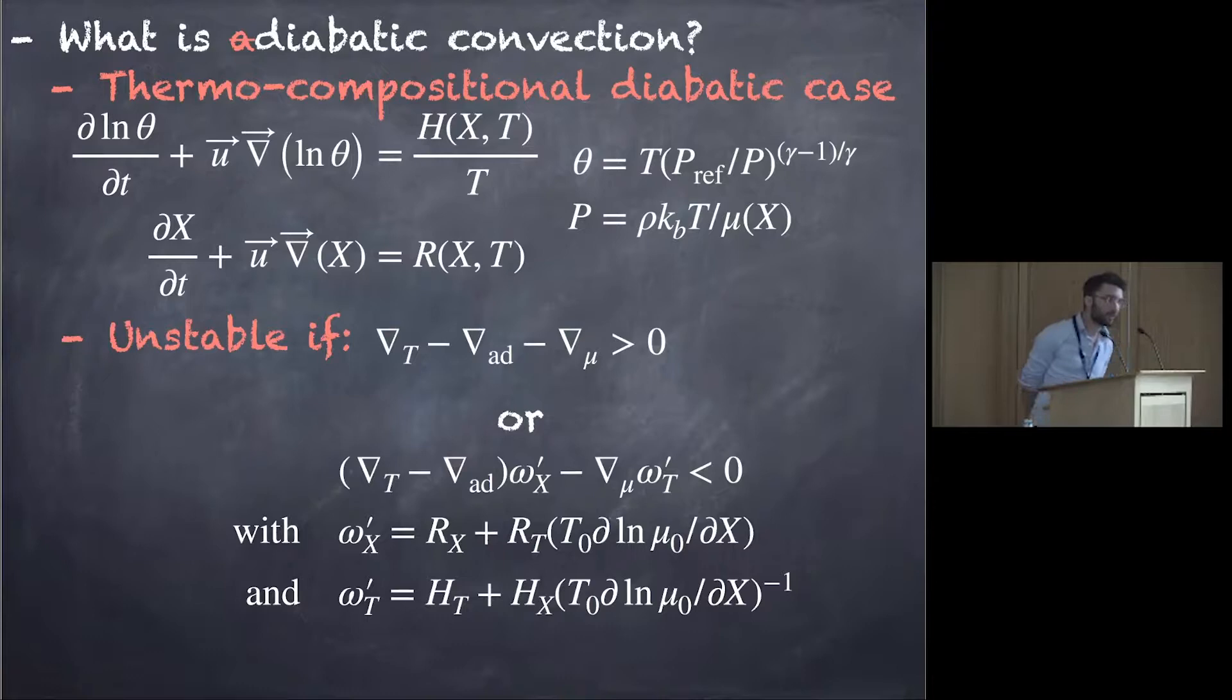The Ledoux one that we are gonna call now adiabatic criterion, because it does not involve the source term, and the new one, here, that actually depends on the coefficient omega prime x and omega prime t, that are a function of the partial derivative of the source terms. And we call this new criterion the diabatic one, because here, source terms are going to be important for this one.